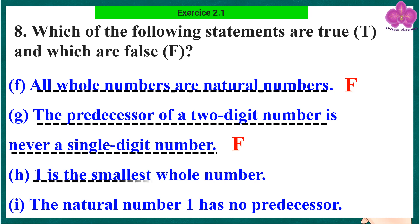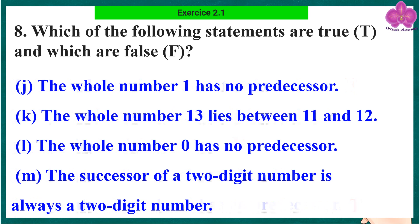Statement n: 1 is the smallest whole number. False. Statement o: The natural number 1 has no predecessor. True. Statement p: The whole number 1 has no predecessor. False.